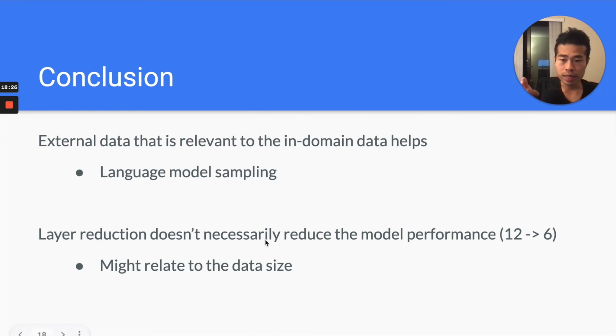So this is one of the conclusions: layer reduction doesn't necessarily reduce the model performance. So that's what you can learn from this. It's probably when you train a model, you can try to reduce the number of layers and see if the performance drops, maybe just drops 0.1 or even not dropping. Then you can just use that model. It's just a better model. And another conclusion is external data that is relevant to the in-domain data helps a lot. And how you can select external data is that you can use language model sampling. But the catch is the language model that you use to sample should be trained on your own dataset.